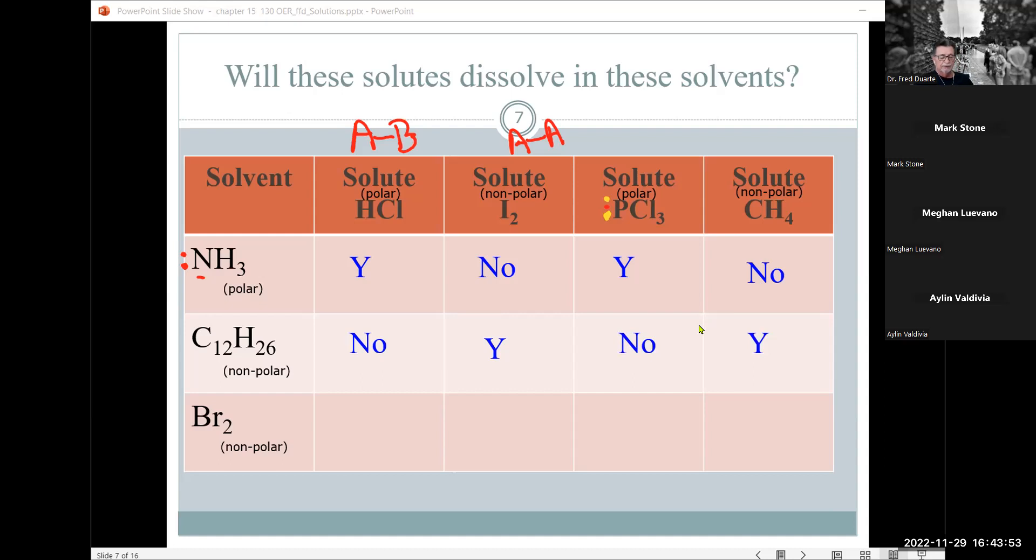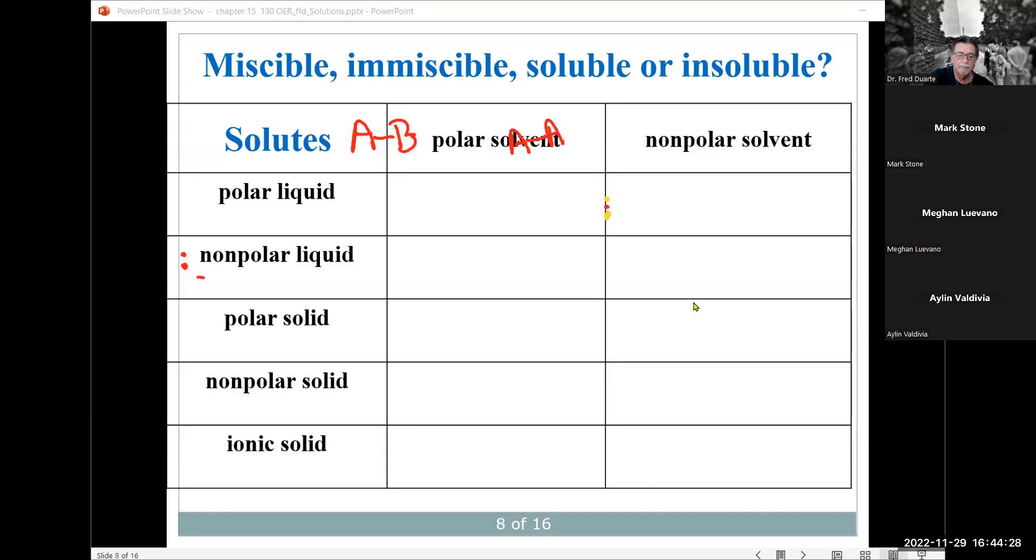Hydrochloric acid, HCl and bromine would be a no, again, because the differences in polarity, but it would be a yes with iodine. Because both of them are nonpolar. No with PCl3 and yes with methane, the hydrocarbon. So to rehash here, to answer these types of questions, is you have to define the polarity of the molecule and then remember like dissolves like.